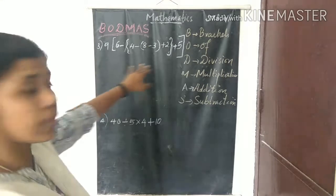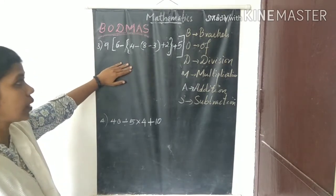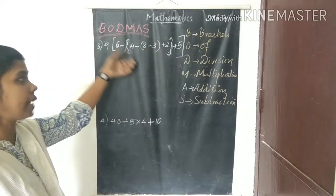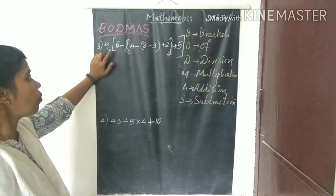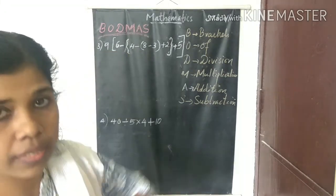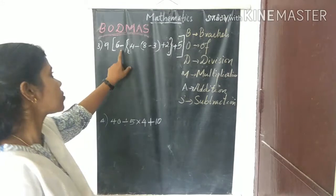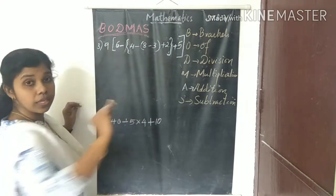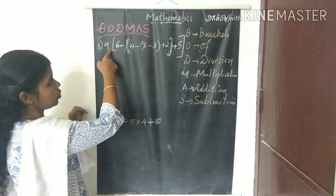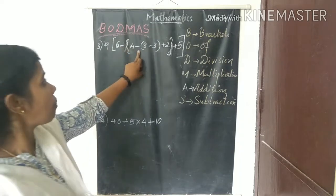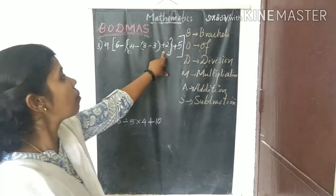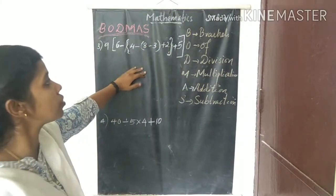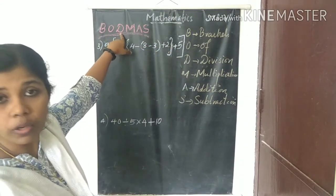Next, we have two questions with two or more mathematical operations and brackets. In this question, three types of brackets appear — simple bracket, curly bracket, and square bracket — along with multiplication and addition and subtraction operations. We apply the BODMAS rule.